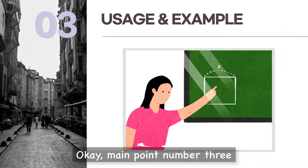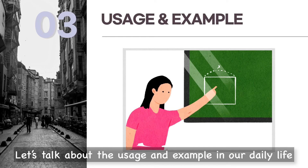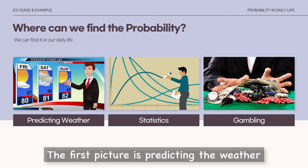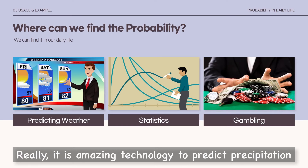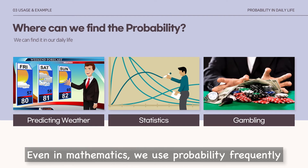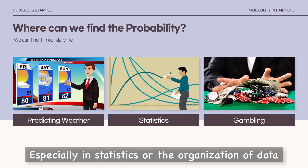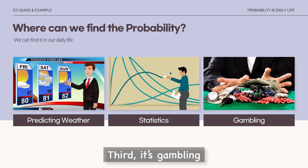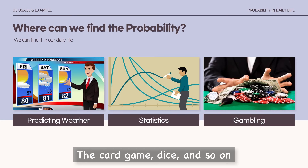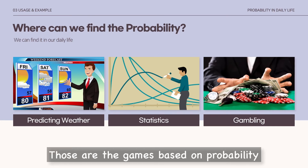Main point number three: let's talk about the uses and examples in our daily lives. The first picture is predicting the weather — it is amazing technology to predict precipitation. Second, statistics: even in mathematics we use probability frequently, especially in statistics and the organization of data. Third, it is gambling. Gambling is one of the oldest uses in our lives — the card game, dice, and so on. Those are games based on probability.